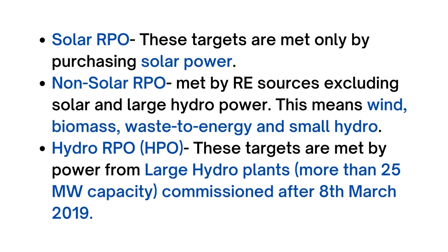Let us see how RPO targets under these categories will be met. Solar RPO are met only by purchasing solar power. Non-solar RPO are met by renewable sources excluding solar and large hydropower — this means wind, biomass, waste energy, and small hydro. Hydro RPO, or in short HPO, are met by power from large hydro plants of more than 25 megawatt capacity, which are commissioned after 8 March 2019.